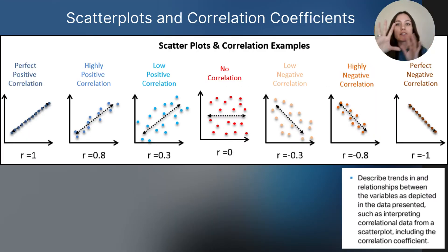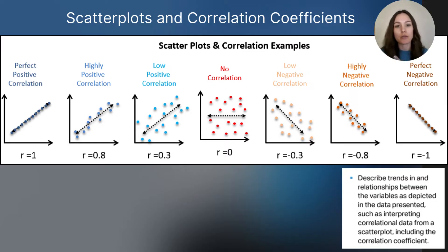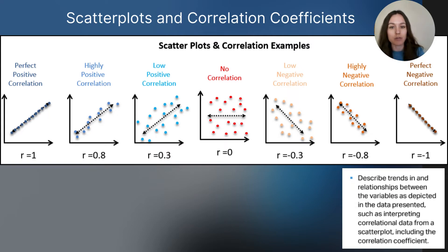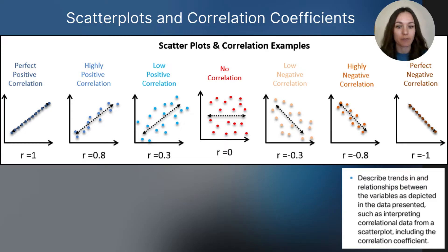This diagram nicely arranges both of those together — visually what a relationship looks like on a scatter plot when we're plotting our two variables, as well as the corresponding correlation coefficient. You can see the number value at the bottom with the visual representation on the scatter plot.